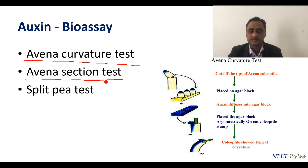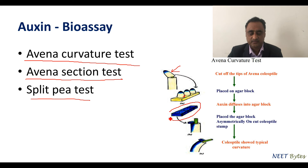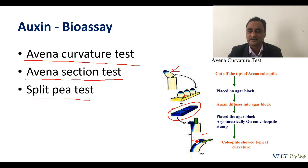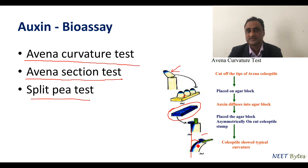In the Avena curvature test, the tip is cut and placed in an agar block containing auxin. This block is then placed differentially on the coleoptile, causing bending. An imaginary line is drawn and the angle measured — this angle is directly proportional to the total amount of auxin present. This is how auxin activity and quantity are tested in the bioassay.